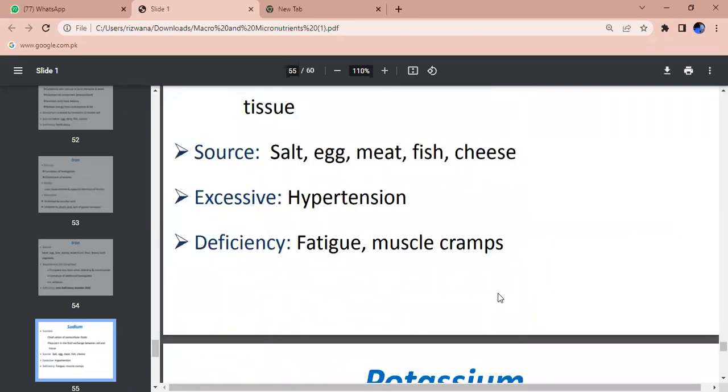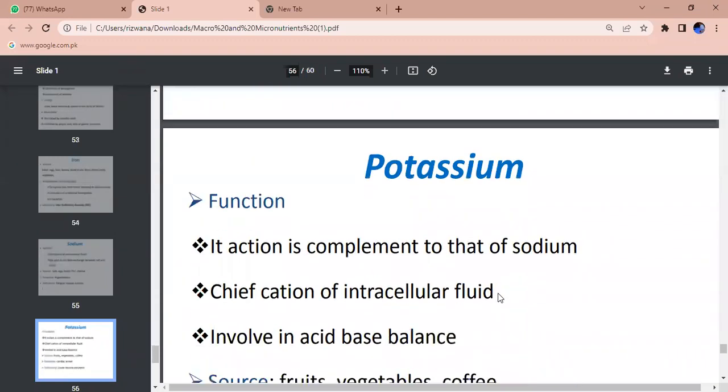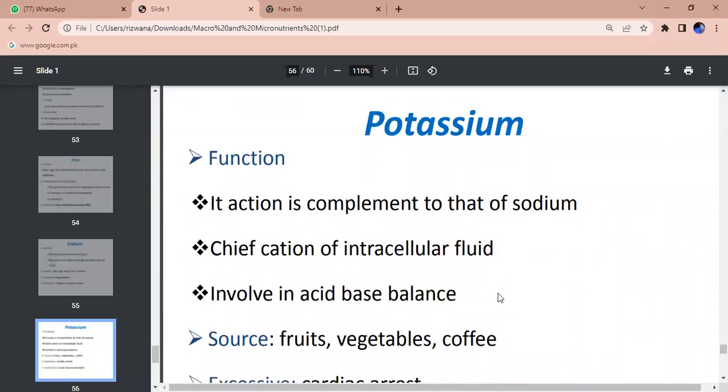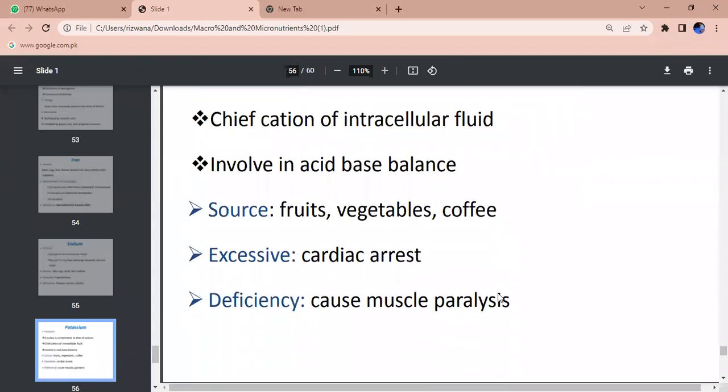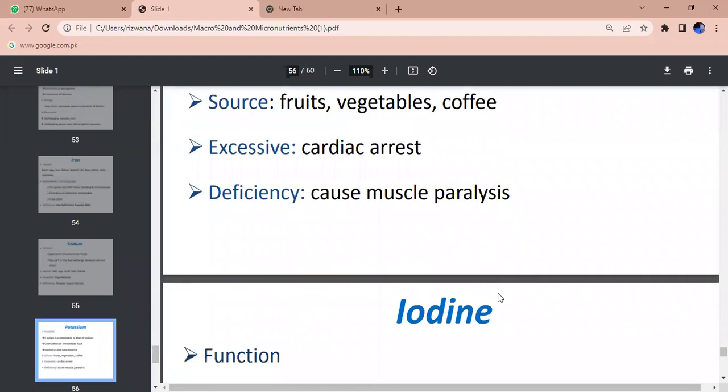Potassium - this action complements that of sodium. Chief cation of intracellular fluid. Keeps cardiac in rhythm. Acts in acid-base balance. Sources - pulses, vegetables, coffee. Excess can cause cardiac arrest. Deficiency also causes cardiac problems, causes muscle paralysis.